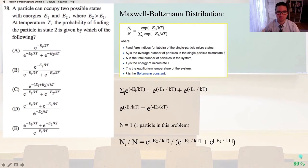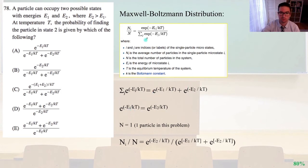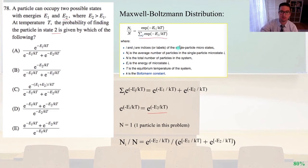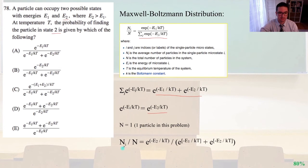Number 78: A particle can occupy two possible states with energies E1 and E2, where E2 is greater than E1. At temperature T, the probability of finding the particle in state 2 is given by which of the following? We use the Maxwell-Boltzmann distribution. In the numerator is the state of interest, state 2, with energy E2. In the denominator is the sum over all states — states 1 and 2 in this problem. With N equals 1 (only one particle), that gives us answer B.